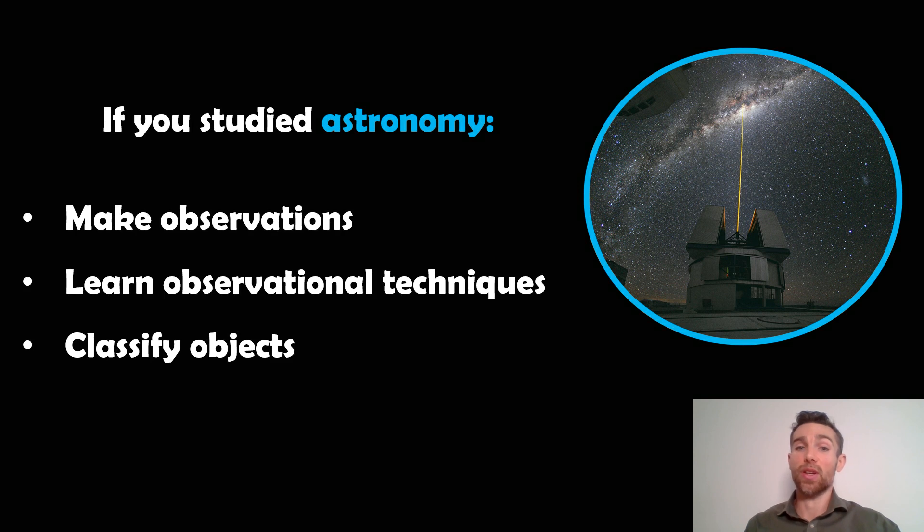And then you'll also learn how to classify the objects. So if we were to observe a galaxy, we need to know what sort of galaxy it is. And again, the astrophysicist would look more at why it's that classification or why they move along and evolve the way they do. So that's just a general idea of things that you would likely cover in astronomy. Again, there's massive crossover and you'll cover core material between the two, but this is like the astronomy side that you'd likely do.